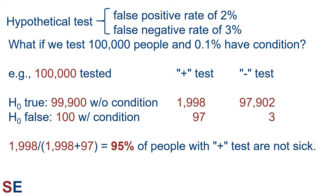Let's look at a third scenario. Now the percentage of individuals who have the condition is one-tenth of a percent. If we test 100,000 individuals, 99,900 will not have the condition, and 100 will have the condition. Of the 99,900 without the condition, 2% will test positive, so that's 1,998. The rest will test negative, as they should — that's 97,902. Of the 100 individuals with the condition, 3% will test negative, so that's 3. The remaining 97 will test positive, as they should. A total of 1,998 plus 97 equals 2,095 individuals receive a positive test result. Of those, 1,998 are individuals that don't have the condition — that means 1,998 divided by 2,095 equals 95% of the people with a positive test result are not sick.